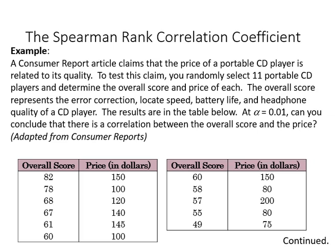Here's an example of the Spearman rank correlation coefficient. A consumer report article states that the price of a portable CD player is related to its quality. To test that claim, we're going to look at the rank of price for CD players and the rank of overall quality score. That quality score is an index based on several criteria that include error correction, locate speed, battery life, and headphone quality.